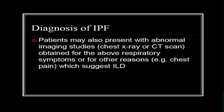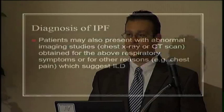Patients can also present with abnormal imaging studies. I see many patients come to me with abnormal chest x-rays or CT scans, usually obtained for respiratory complaints like shortness of breath and cough, or incidentally found — for example, a patient who had abdominal pain, got a CT scan of the abdomen, and abnormalities were found on the chest. So the major ways people present are with shortness of breath and cough, or with abnormal imaging studies.